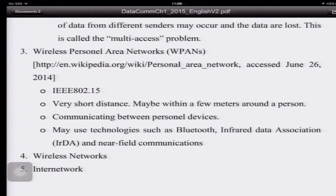You may also have heard of wireless personal area network, or WPAN. This is IEEE 802.15 for very short distance — maybe a few meters around a person. So if I'm working here and I have an iPad, a computer, a printer, a scanner, just around myself, and it's wireless — communicating between personal devices. We can use Bluetooth or infrared.